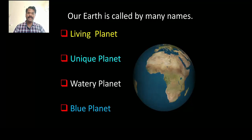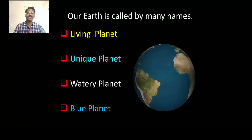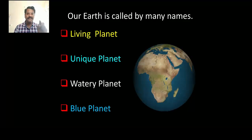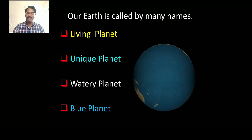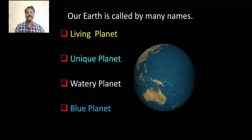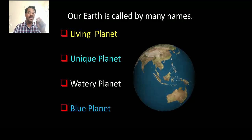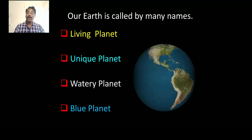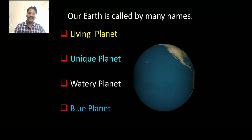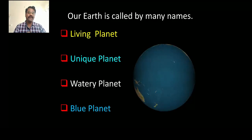It is called watery planet because no other planets in the solar system have water — the earth is the only one that contains water. And it is called blue planet because where water is available, it looks blue in color when viewed from space.